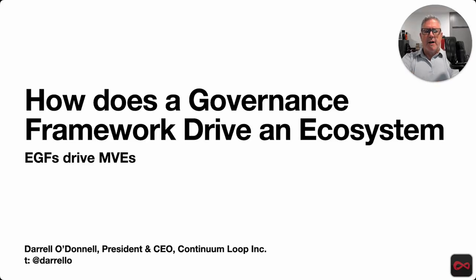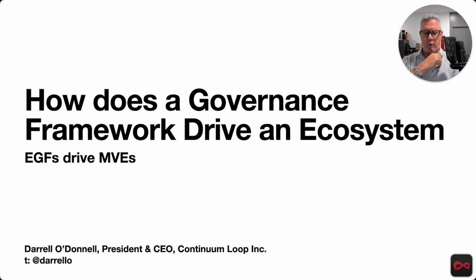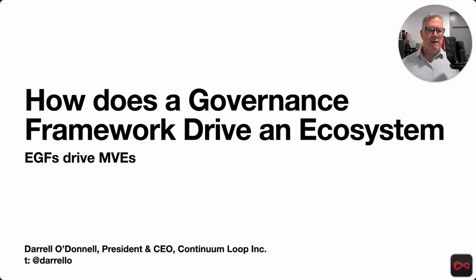Hey folks, Daryl O'Donnell here from Continuum Loop. This is a second video — the first video will be linked down below. It is related to what is a minimum viable ecosystem and why do you want to drive one, why do you want to create one to get things rolling? This one here is about how do you use an ecosystem governance framework to drive the activities of an ecosystem, particularly that MVE, the minimum viable ecosystem.